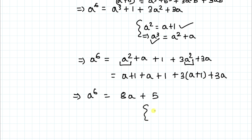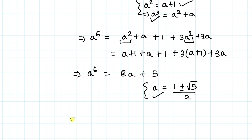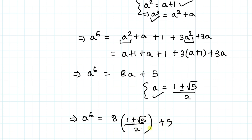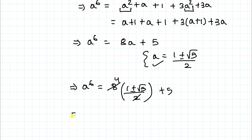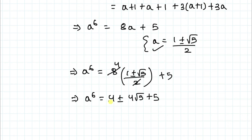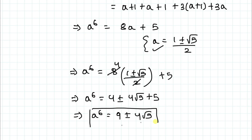From the quadratic formula we found a = (1 ± √5) / 2. Substituting into a⁶ = 8a + 5: a⁶ = 8 × (1 ± √5) / 2 + 5. Here 8 divided by 2 gives 4, so a⁶ = 4 ± 4√5 + 5. Therefore, a⁶ = 9 ± 4√5 is the final answer.